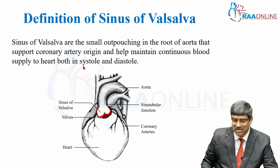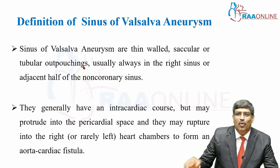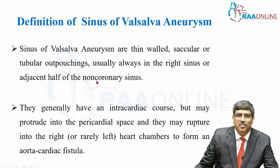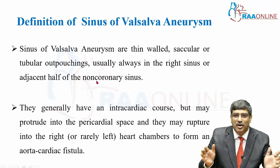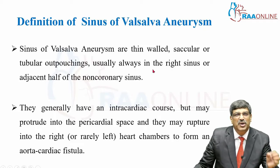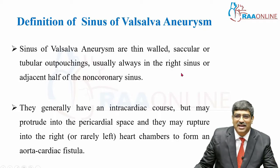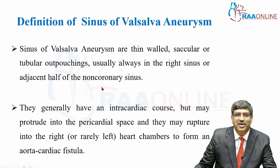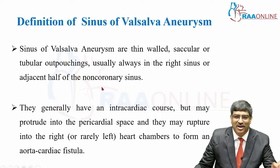That is the definition of Sinus of Valsalva. Then what is a Sinus of Valsalva aneurysm? When this small outpouching becomes a saccular or tubular outpouching, it becomes aneurysmal. These are thin-walled and usually arise from the right sinus or adjacent portion of the non-coronary sinus.